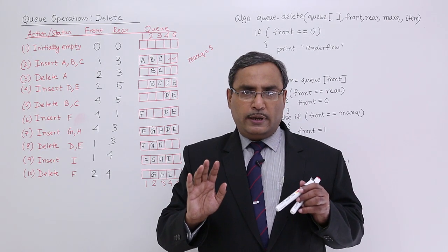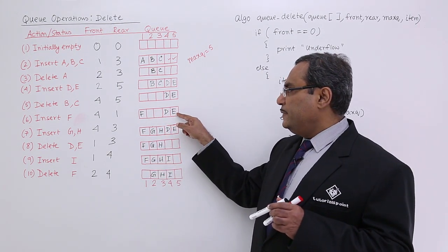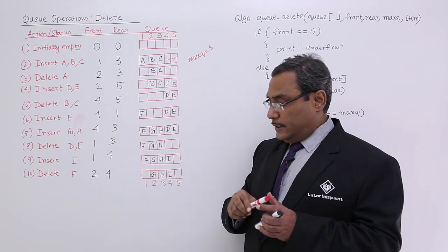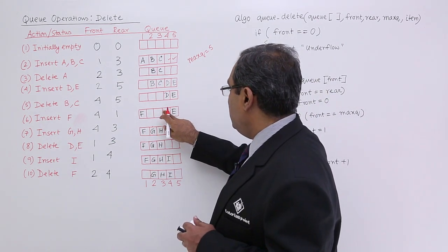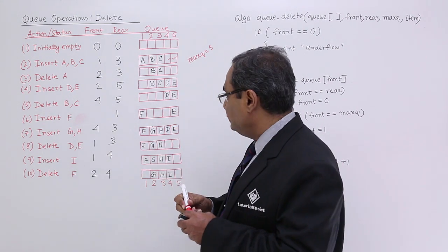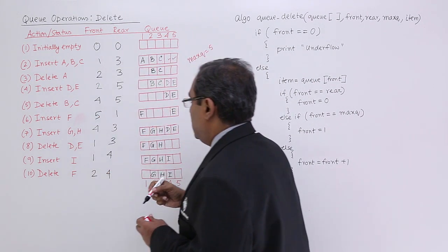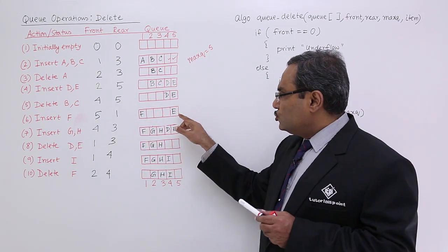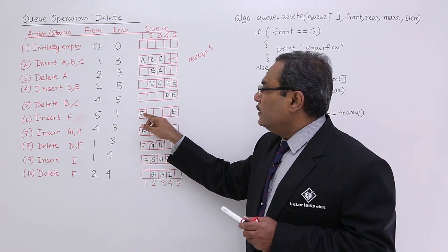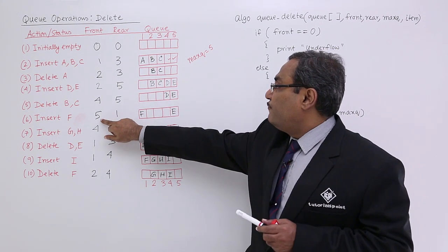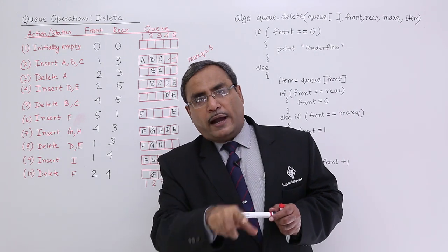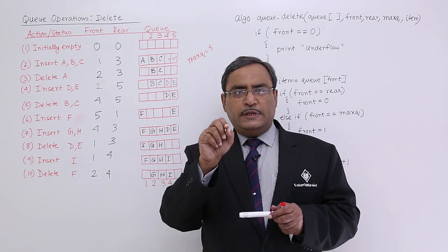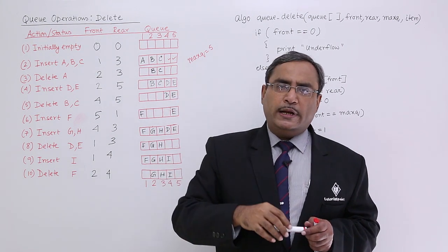Let us suppose D has got deleted, so front has become E, which is at location number 5 — so it will be 5 and rear will be 1. Now if I carry on the delete operation from the front end, E will get deleted and then front will become 1. That means if front is equal to max_queue, then front is equal to 1 — it will come back to the linear logic again. The default case is front is equal to front plus 1, meaning if I delete data from the second place, the third place data will be the next front.